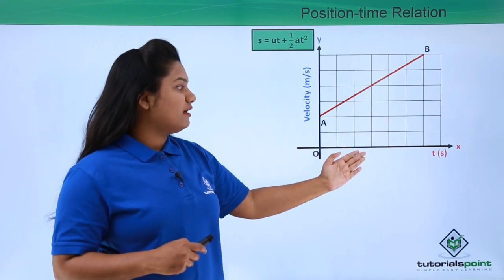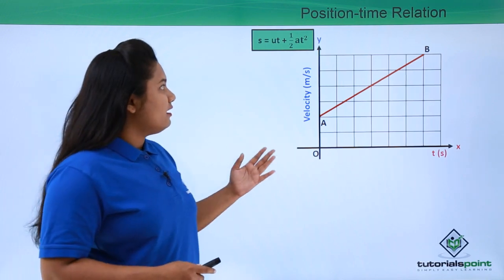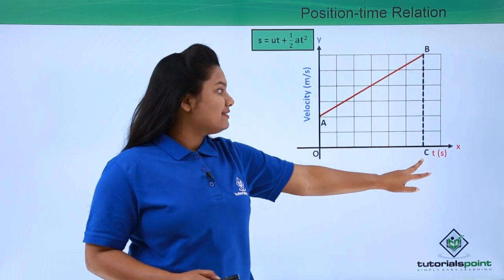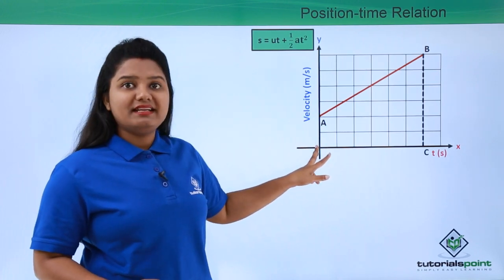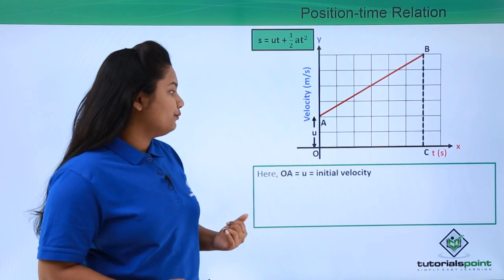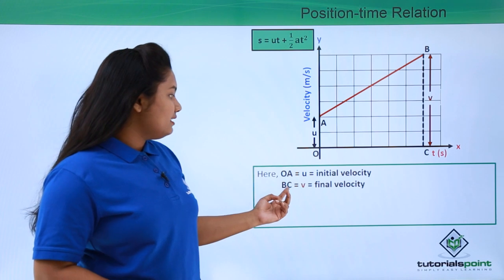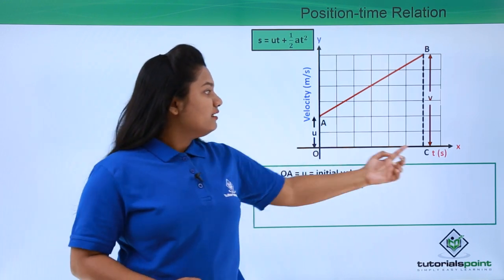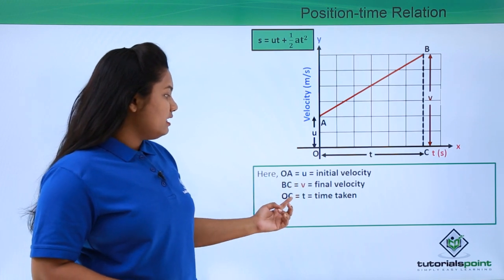Here I have a velocity-time graph AB which shows that the body is in uniform acceleration. In order to derive this relation, we will be drawing a perpendicular from point B on the x-axis which touches it at point C. The body had a certain initial velocity given by OA, so initial velocity u equals OA, final velocity v equals BC, and the time interval OC equals t.